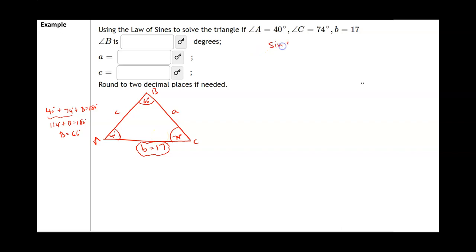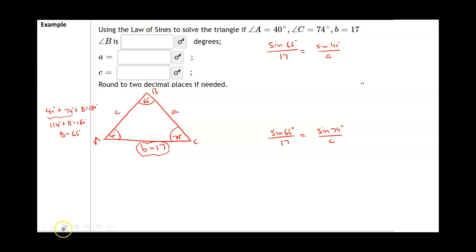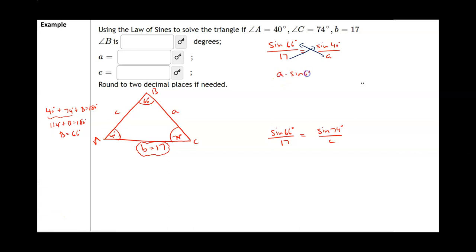My known ratio is sine of 66 degrees over 17. To find the length of side a, I set that equal to sine of 40 degrees divided by a. I can use my known ratio again — sine of 66 degrees divided by 17 — to find side c, setting it equal to sine of 74 degrees divided by c. To solve, I use cross multiplication: a multiplies to the left, 17 multiplies to the right.